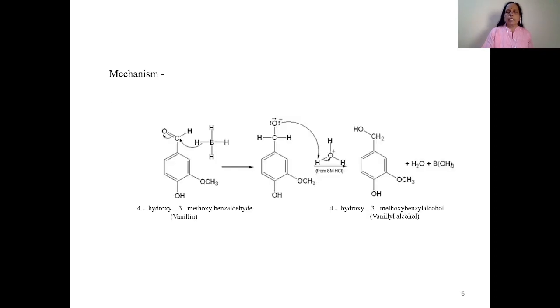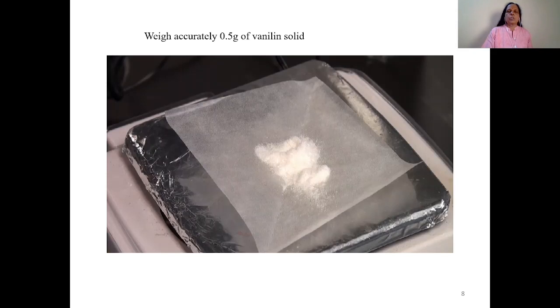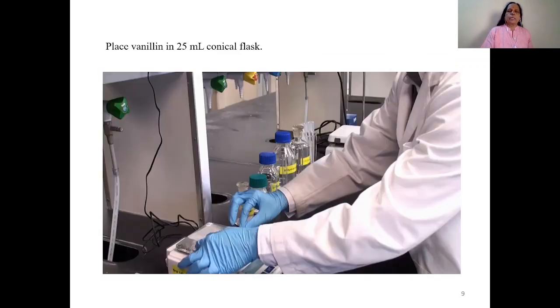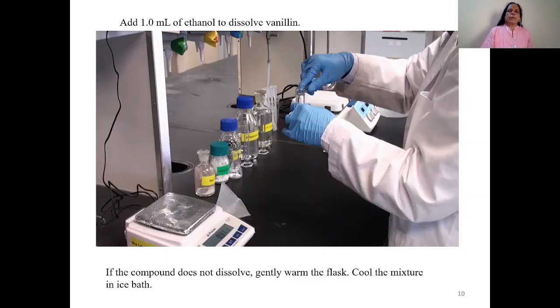This is the mechanism. Now let us consider actual process. First, weigh accurately 0.5 gram of vanillin solid. Transfer that in 25 ml conical flask. To that add 1 ml of 95% ethanol to dissolve that vanillin completely. Suppose this vanillin is not dissolved completely in alcohol, you just warm that flask and after that cool that in ice bath.